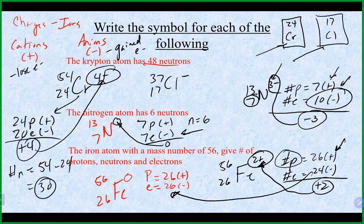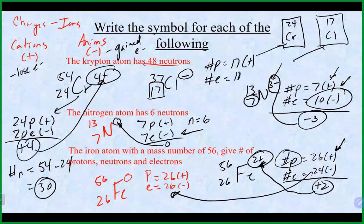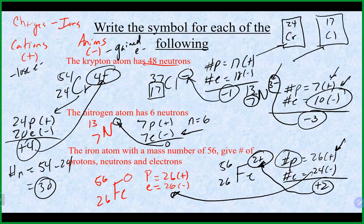For chloride with a minus-one charge: protons = 17 (from the atomic number). A negative charge means it gained electrons, and a minus-one charge means it gained 1 electron. A neutral chlorine has 17 electrons, so this ion has 18 electrons. Neutrons = 37 minus 17 = 20.